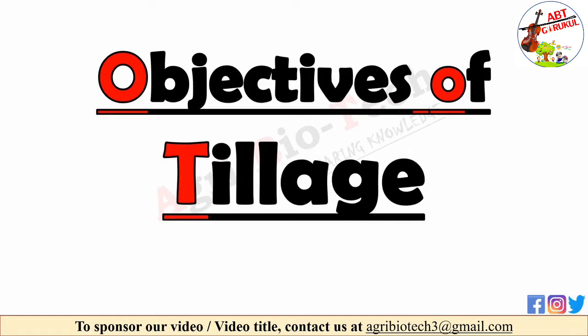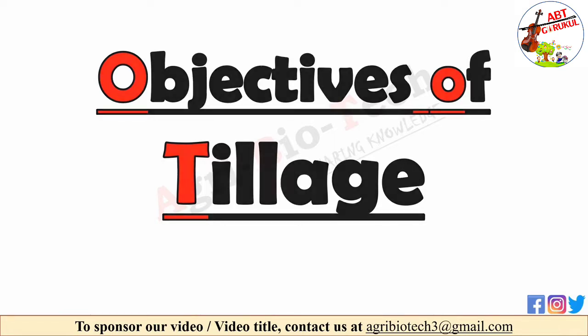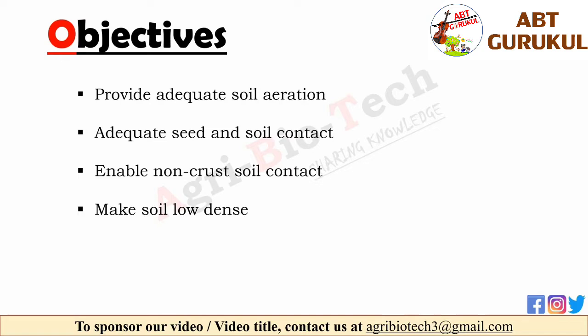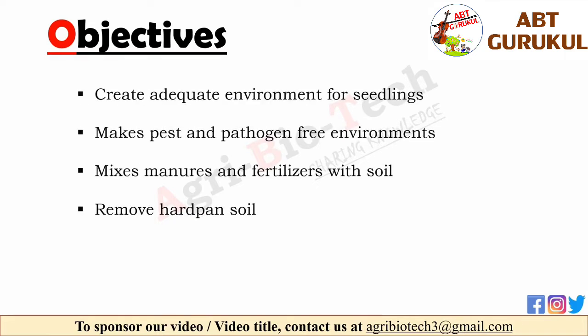Now let's look at the objectives of tillage. First, it provides adequate soil aeration for gaseous exchange in the seed and root zone. It provides adequate seed-to-soil contact to permit water flow to seed and seedling roots. It also enables a non-crust soil surface to permit seedling emergence. Tillage makes the soil less dense, permitting root elongation and proliferation. It creates an adequate environment providing adequate light to seedlings, and also makes a pest and pathogen-free environment. It helps in mixing applied manures and fertilizers with the soil.